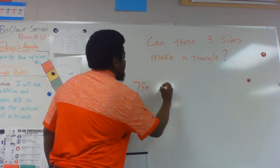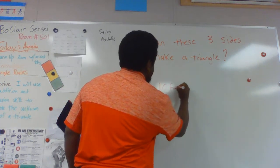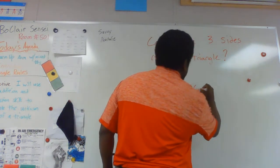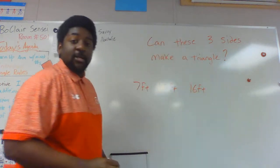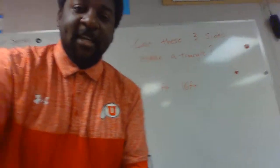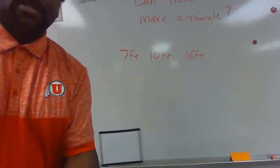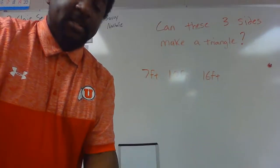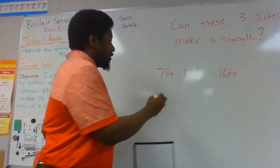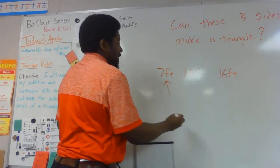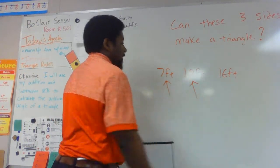7 feet, 10 feet, and 16 feet. So the two smallest sides should be bigger than the third side. Right here my two smallest sides are 7 feet and 10 feet.